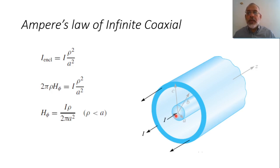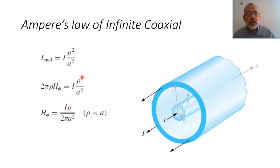The magnetic field inside the inner conductor at a radius ρ, where ρ is less than A, would be H_phi = Iρ/(2πA²). It can be noted that in this case the magnetic field is proportional to ρ, whereas in the previous case it was proportional to 1/ρ.